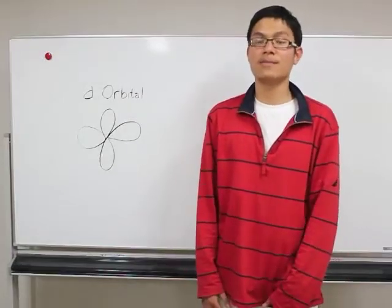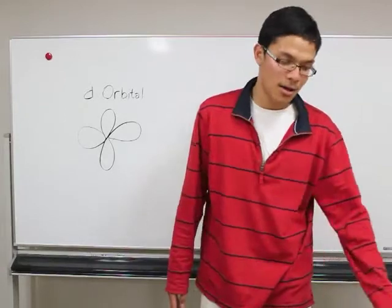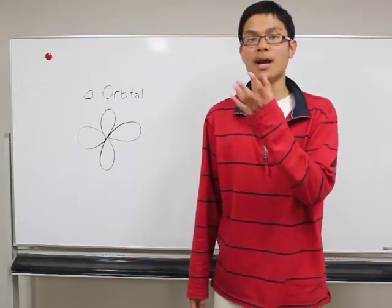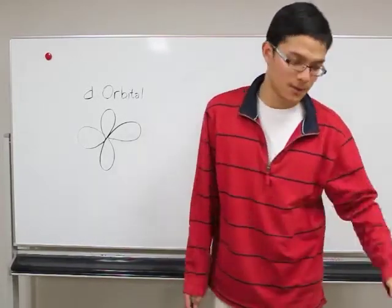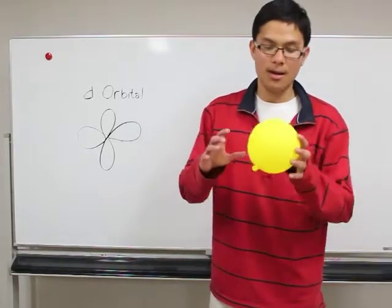Now I will try to explain about orbitals. As my friend Wasu has said, a region where most likely an electron can be found is called an orbital. So actually orbitals are just empty spaces here.